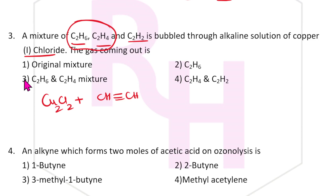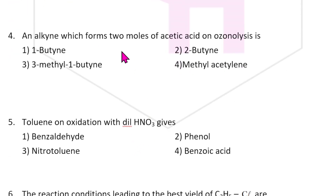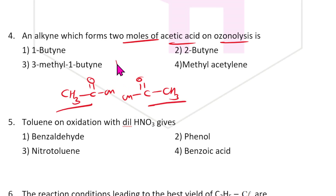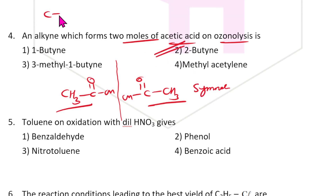An alkyne which forms two moles of acetic acid on ozonolysis — CH3-C(=O)-OH should form. The total carbon atoms should be four, and it should be symmetrical. The answer should be 2-butyne: C≡C with CH3 on both sides, i.e., CH3-C≡C-CH3.